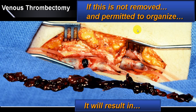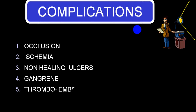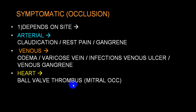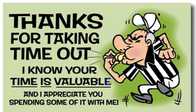Complications: occlusion, ischemia, non-healing ulcer, gangrene, and thromboembolism involving systemic or pulmonary systems. Arterial occlusion produces claudication, rest pain, and gangrene in peripheral vessels. Venous occlusion produces edema, varicose vein, infections, venous ulcer, skin changes, and venous gangrene. Valvular thrombus can occlude and produce acute pulmonary edema. Arterial thromboembolism produces systemic gangrene; venous thromboembolism produces pulmonary embolism; right heart produces pulmonary embolism; left heart produces systemic embolization leading to gangrene.